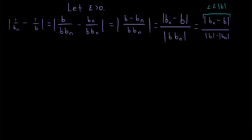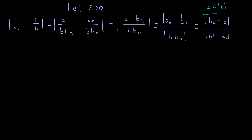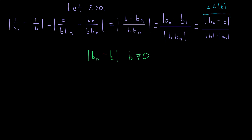In our proof of the limit law for the product of sequences, it was useful to notice that the absolute value of bn is bounded since bn is a convergent sequence, giving an upper limit on how big it could be. However, since we're trying to make this expression small and the absolute value of bn is in the denominator, putting a limit on how big it can get doesn't help us. The absolute value of bn will cause problems because it can get small, making the whole expression big. So we're going to have to create some definite separation between the absolute value of bn and 0. This is really cool, I promise you.